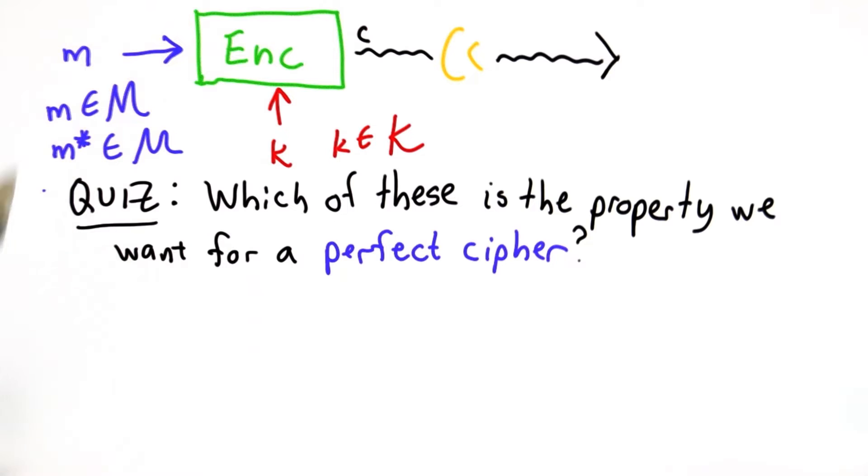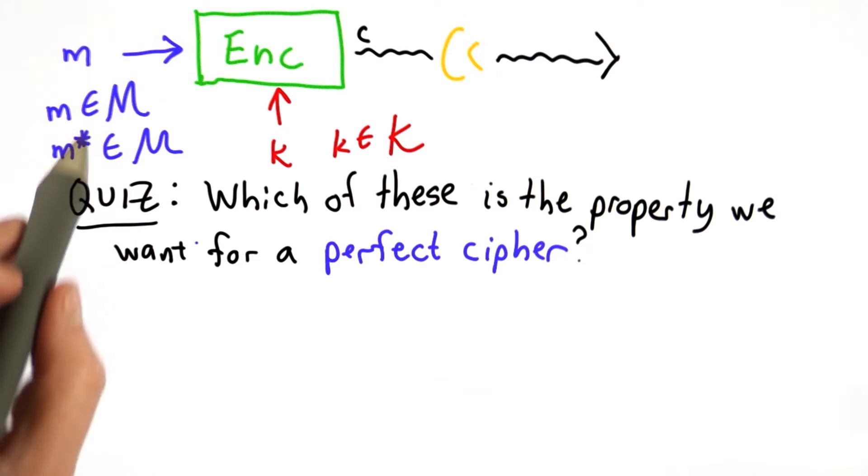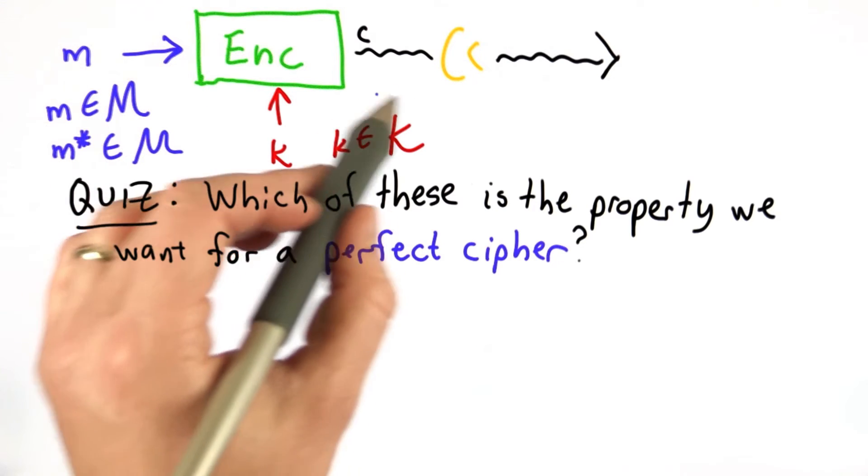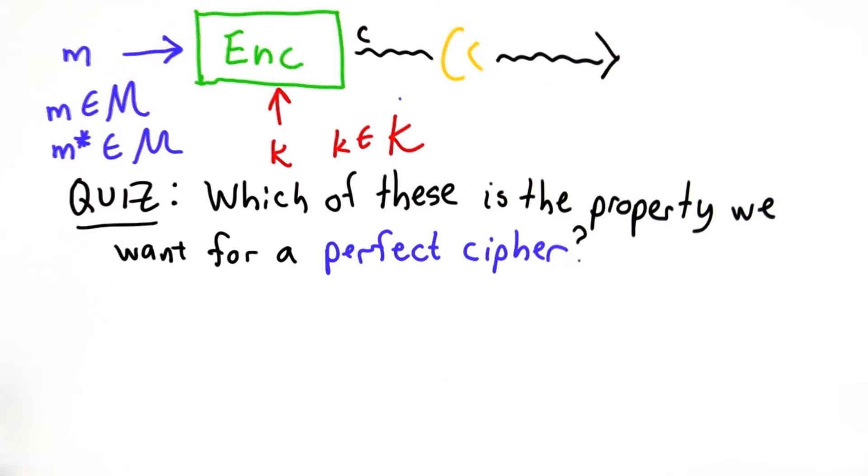I'm going to introduce some notation. Our message is selected from the set of all possible messages. We have some other message we'll call m star, also selected from M. We don't know if m is equal to m star. Both of these can be thought of as drawn from the set of messages. And we have some key drawn from the set of possible keys.